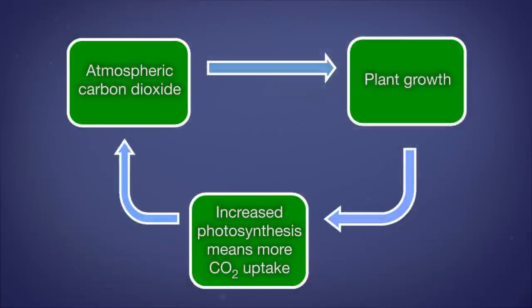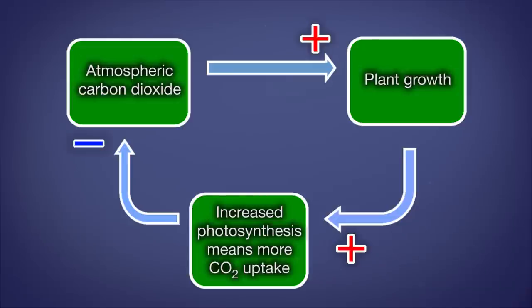There are some negative feedback systems that could become quite prominent. For example, increased atmospheric carbon dioxide concentrations will increase plant growth. Increased plant growth means that plants will take up more CO2 from the atmosphere, thereby decreasing the amount of carbon dioxide in the atmosphere, which will lead to global cooling. So that is potentially a prominent negative feedback cycle related to plant growth and carbon dioxide.